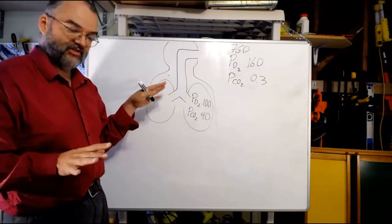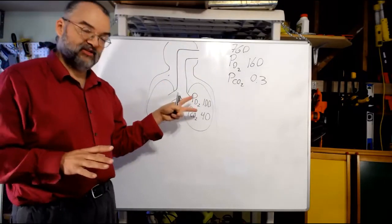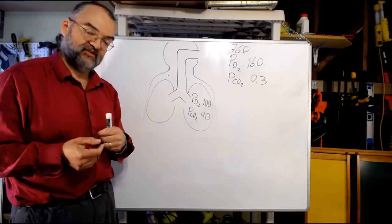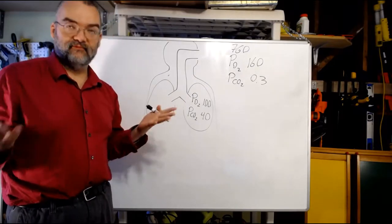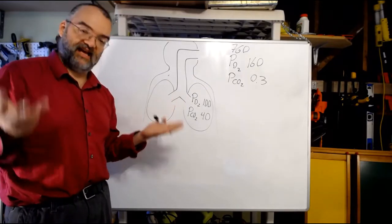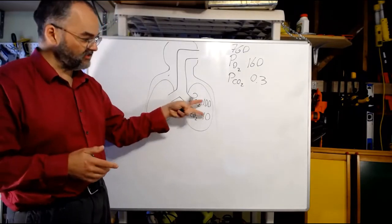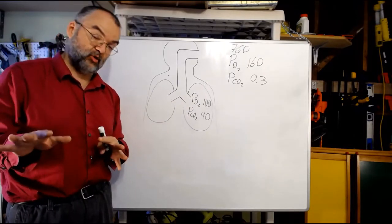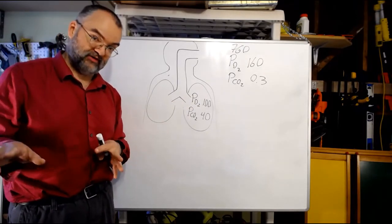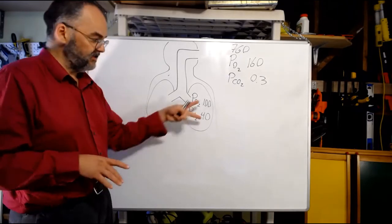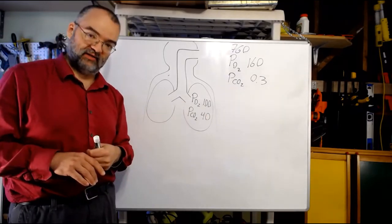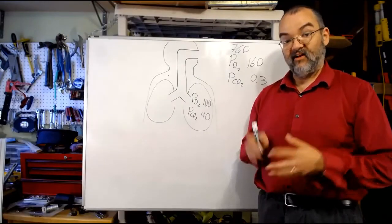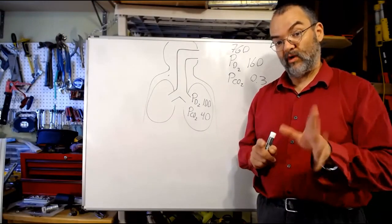So the short version: alveolar air under normal circumstances has lower oxygen and higher CO2 than outside air. For a typical person at sea level, pO2 of 100 and pCO2 of 40 are the standard numbers we'll work with for alveolar air. Unless told otherwise or asked to calculate differently, you may assume that's what the air in the alveoli looks like when breathing normally. So now the question is: what about the blood?